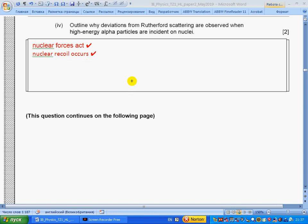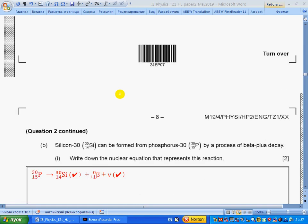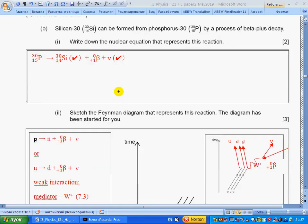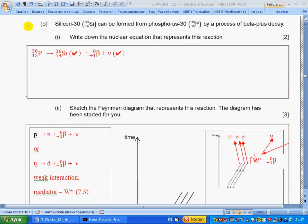Part b: Outline why deviation from Rutherford scattering is observed when high-energy alpha particles are incident on the nucleus. Nuclear forces act and nuclear recoils occur because mass is big—nuclei are comparable and nuclei collide. Part c: Silicon can be formed from phosphorus by a process of beta-plus decay. Write down the nuclear equation that represents this process. Don't forget neutrino here.